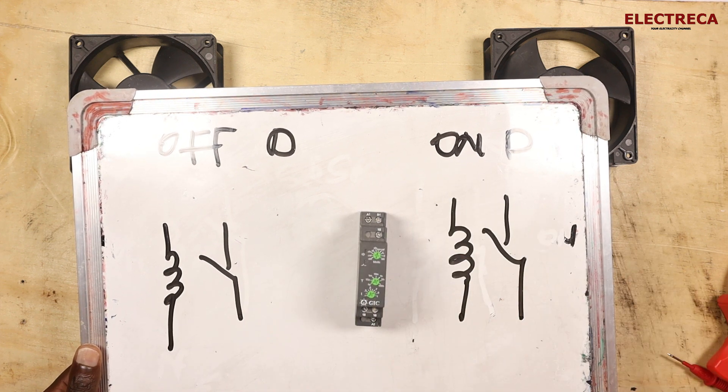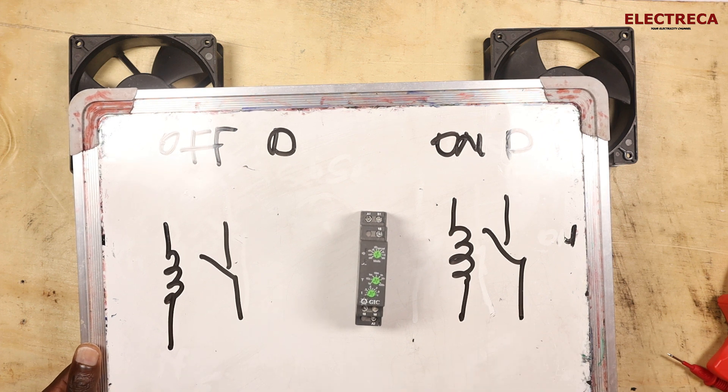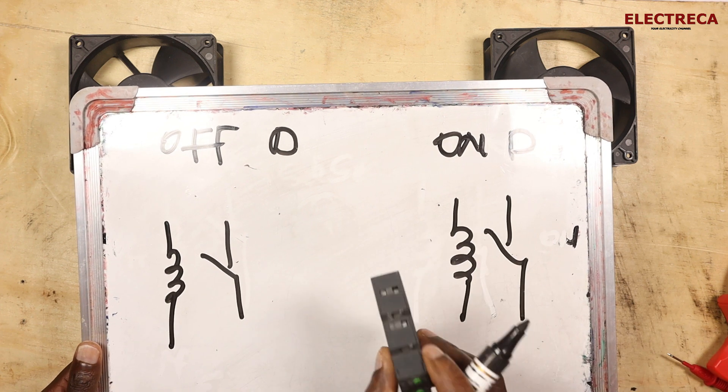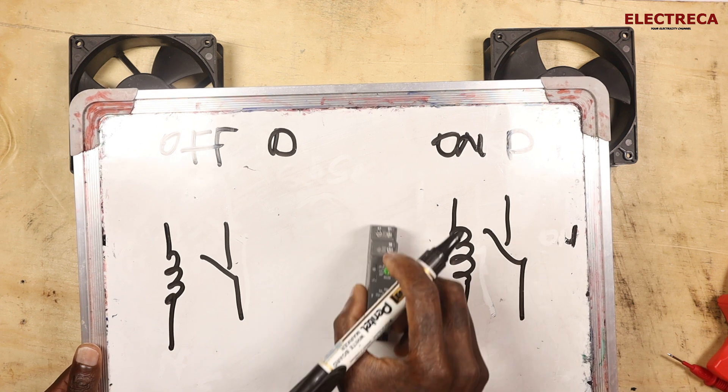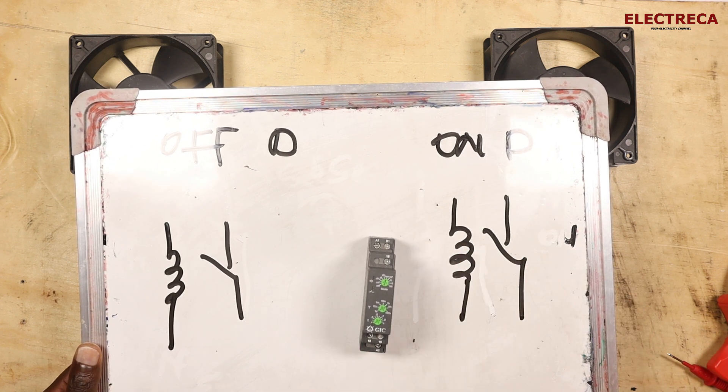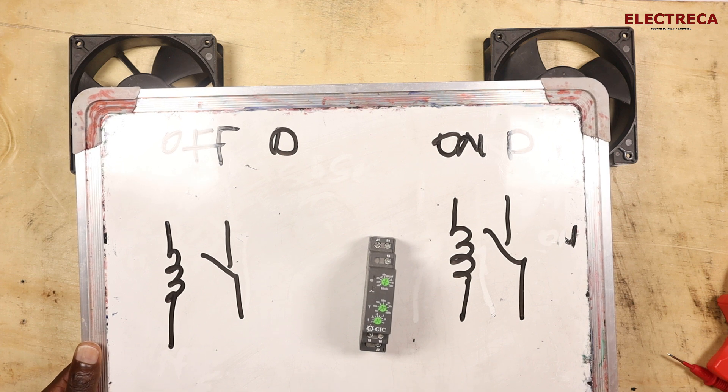So it has a common and then it has got two throws which is 18 and 16. So you have 15 this side which is the common, and then you have 16 which is closed, and then you have 18 which is open.